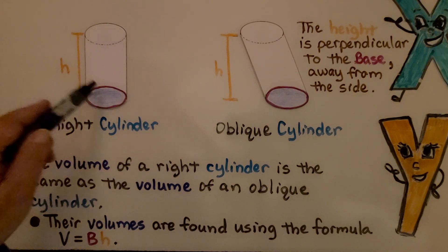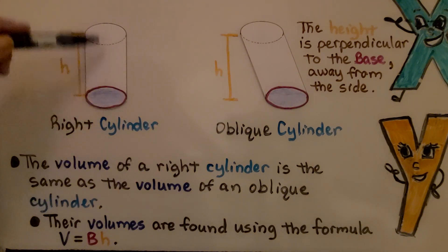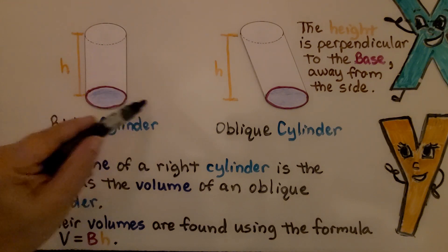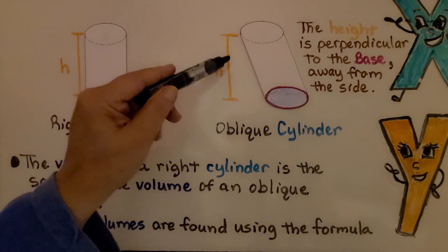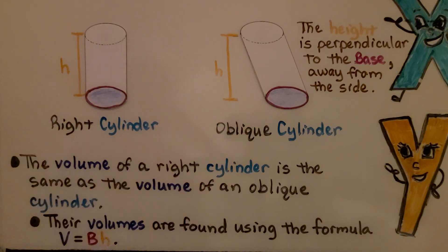Now here we have two cylinders. This one is a right cylinder. It's standing straight up perpendicular to the flat surface here. And this is an oblique cylinder. Right cylinder, oblique cylinder. We can see the height runs along the side of the right cylinder.